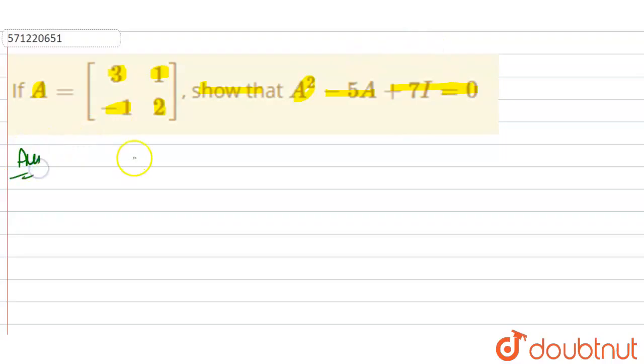First, write down the given matrix. The given matrix A equals 3, 1, minus 1, 2. Now, first of all, you have to calculate the value of A squared matrix.